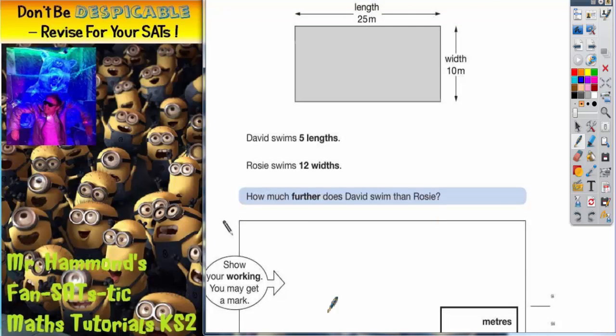We've got some space here for working out. So the simplest thing to do here is take one person at a time. Let's look at David first.